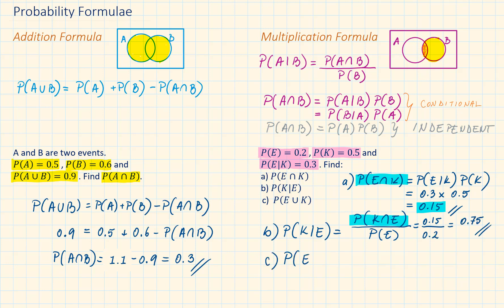And finally, their union. The probability of E union K will be equal to their sum minus their intersection. 0.2 plus 0.5 minus 0.15 which we have worked out in part A. And this is equal to 0.55.